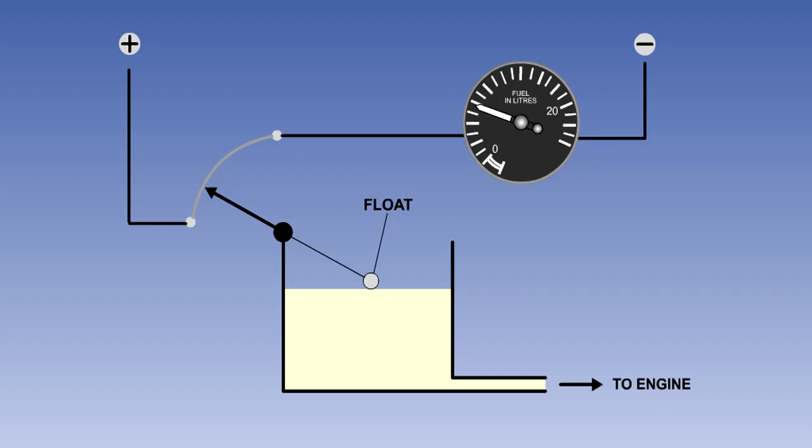Volume measurement can be achieved by having a float in the fuel tank attached by a suitable mechanism to a variable resistor. The cockpit gauge is normally an ammeter calibrated in gallons or liters in a circuit with a resistor.